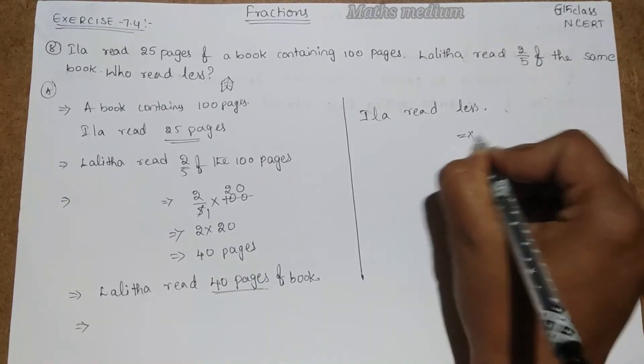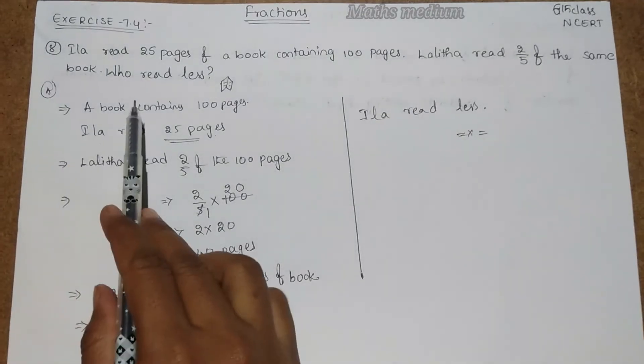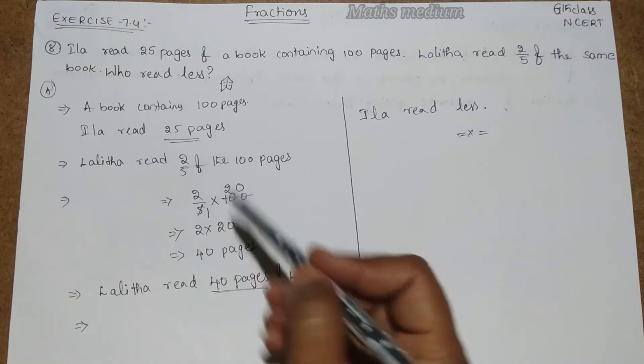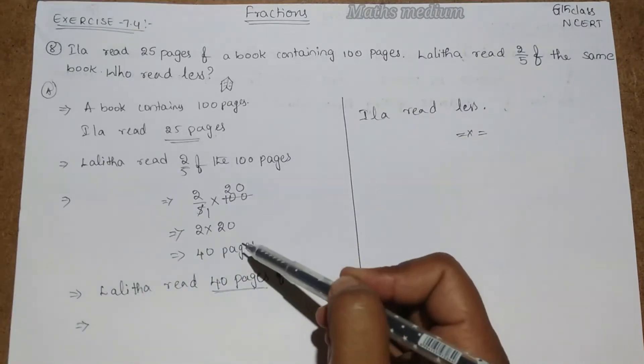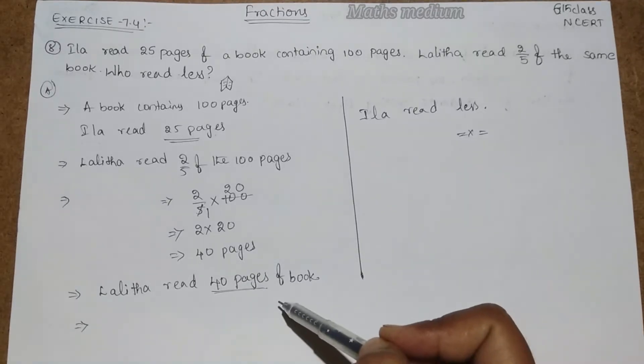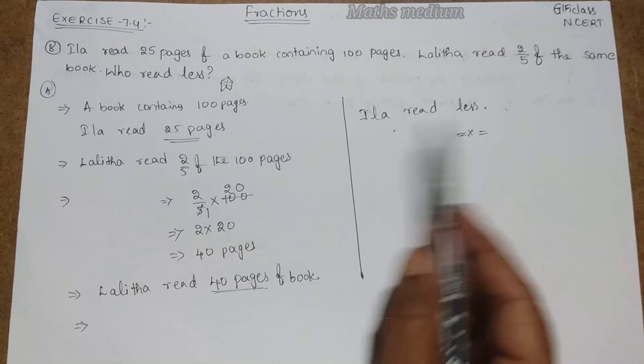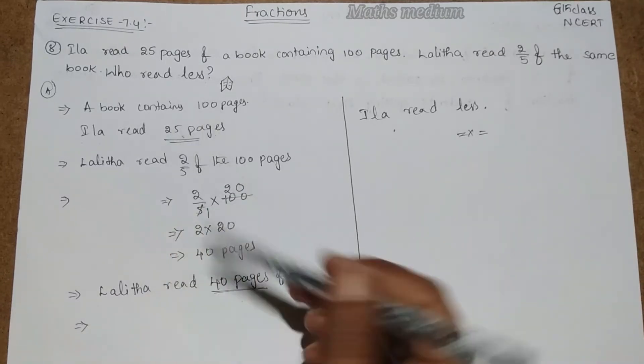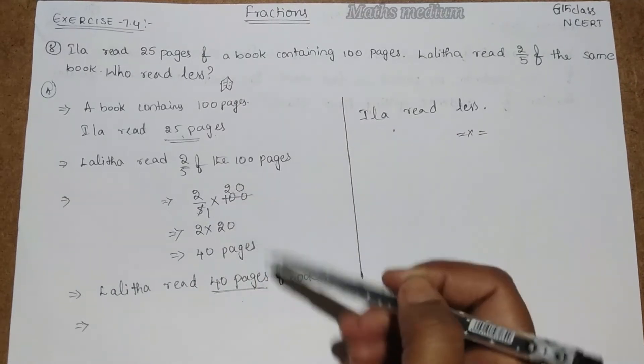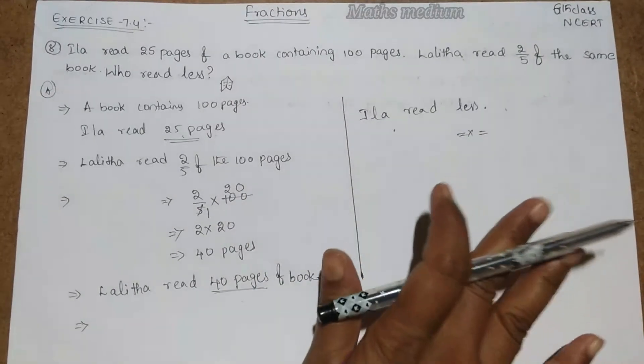This is the answer. Here they gave the question in the form of a word problem. Then we convert it into a fraction, do the simple steps for solving the question, then we will get the answer easily. By comparing Ilar and Lalitha, we get the answer: Ilar read less, because Ilar reads 25 pages of book but Lalitha read 40 pages of book.